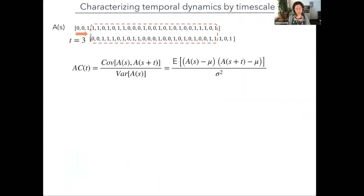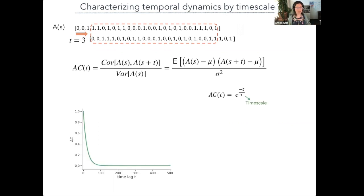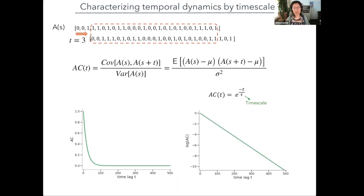Just very briefly, to put everybody on the same page: temporal dynamics can be described by autocorrelation timescales — the covariance of the signal with a time-shifted variant, normalized by the variance. Quite often, autocorrelation functions look like an exponential, and the exponent defines the timescale. To see this exponent more clearly, it's helpful to represent the autocorrelation function on a log-linear axis, where the exponential looks like a straight line and the slope represents the timescale. Most autocorrelation plots I show will be in log-linear scale.